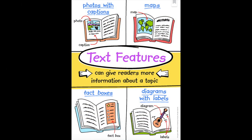Now that we talked about the power words, let's talk about why we're going back to reread this book today. Today you're going back to reread and to really focus in on the text features. Text features give readers more information about a topic. They can include photos with captions, maps, fact boxes, or diagrams with labels. Our text today will include captions — that is words under a picture — and diagrams with labels, which are simple drawings with parts identified or labeled to help you understand something better.